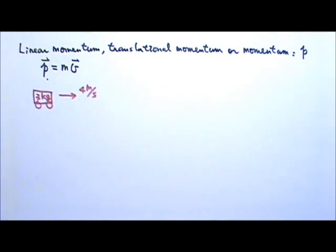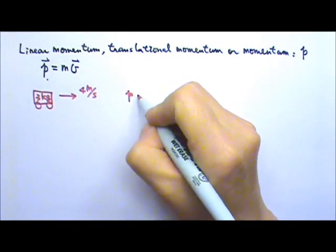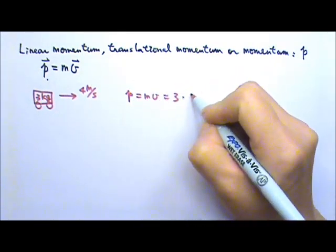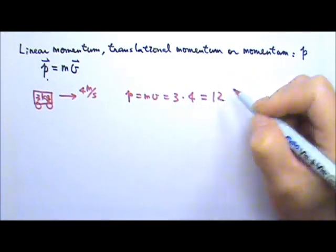Let's look at an example. A 3 kg cart moves to the right at 4 m per second. What is the cart's momentum? Momentum is m times v. The mass is 3 kg. The velocity is 4 m per second. So this is 12.